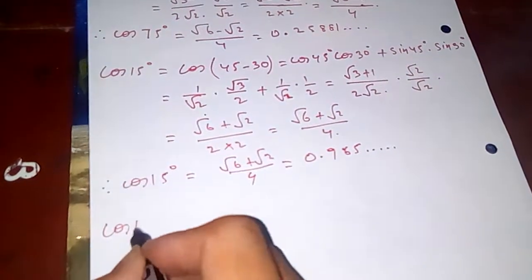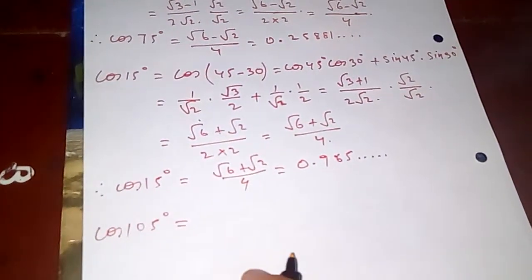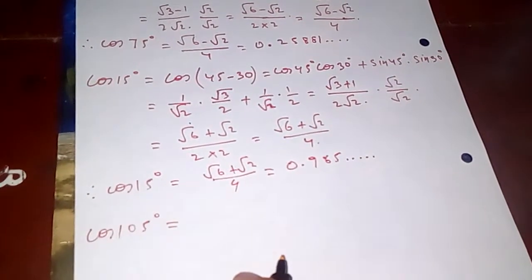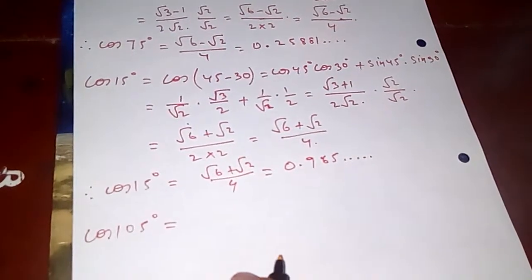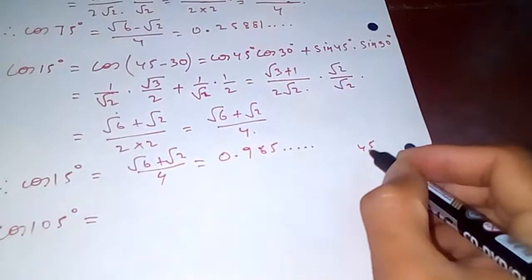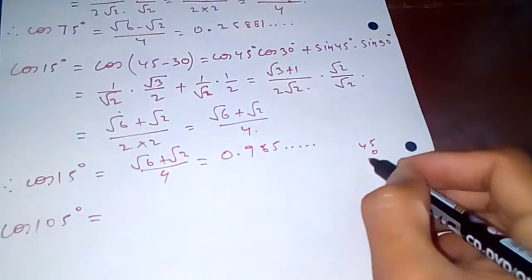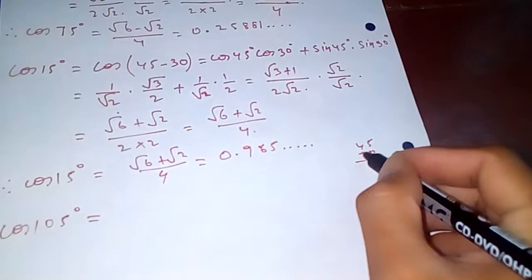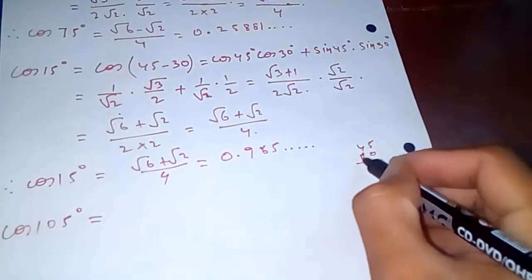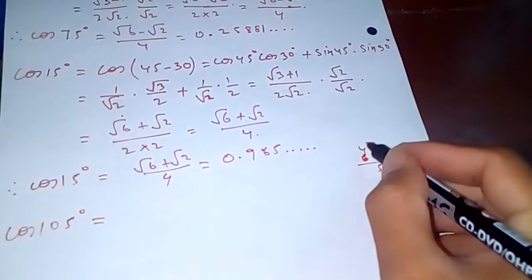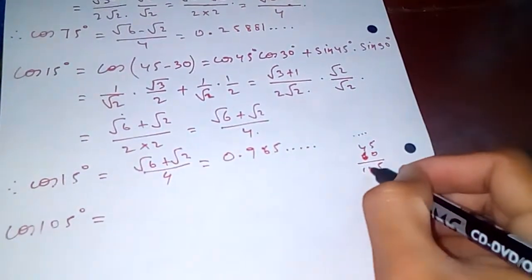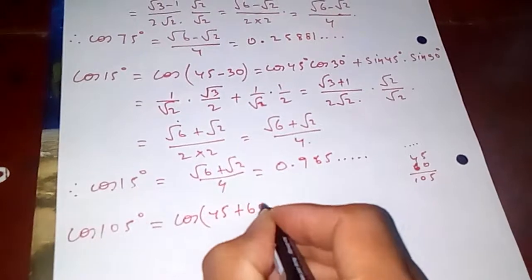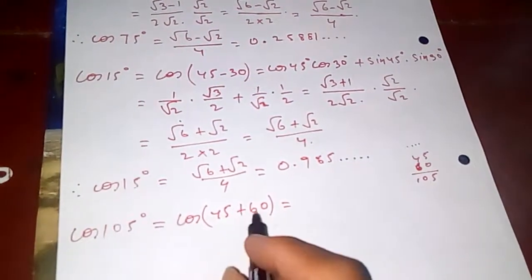Now let's calculate cos 105 degrees. We can write 105 as 45 plus 60, since 45 + 60 = 105. So we apply the cos(A + B) formula to cos(45 + 60).